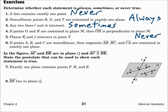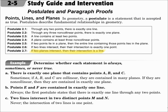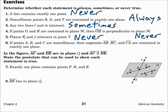Number five: planes R and S intersect in point T. However, that postulate says if two planes intersect, then their intersection is a line, not a point. So statement five is never true.